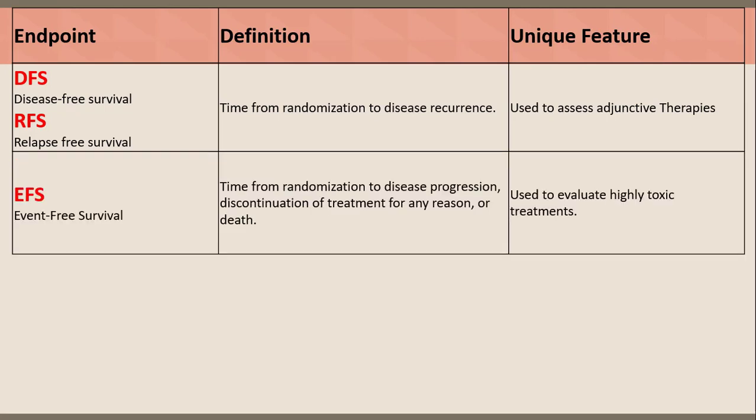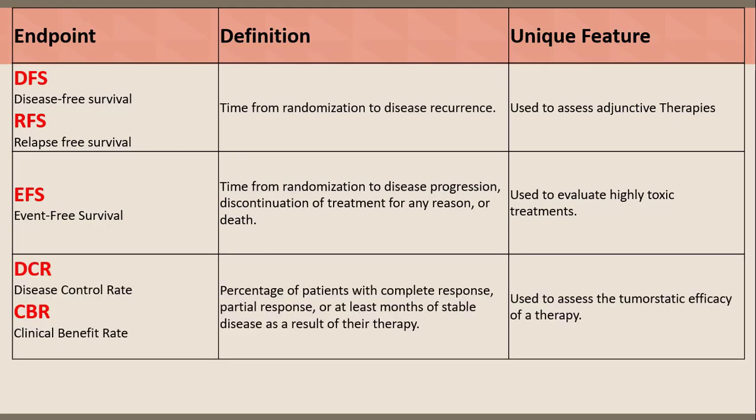EFS (Event-Free Survival) — time from randomization to disease progression, discontinuation of treatment for any reason, or death; used to evaluate highly toxic treatments. DCR (Disease Control Rate) or CBR (Clinical Benefit Rate) — percentage of patients with complete response, partial response, or at least a month of stable disease as a result of their therapy.